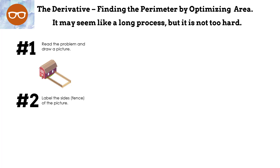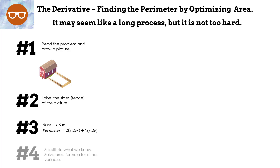Number two: label the sides or the fence of the picture. Number three: we're going to use two formulas — area equals length times width, and perimeter equals two sides plus one side. Number four: substitute what we know. Solve the area formula for either variable. Number five: substitute into the perimeter.